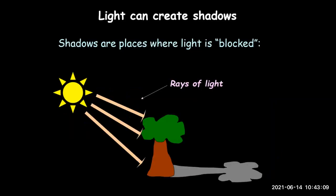The next property is that light can create shadows. Shadows are formed when light is blocked. When you are walking at noon, you can see your shadow on the road because your body blocks the light. For example, when sun rays are blocked by a tree, a shadow is created. If you walk in the dark, there is no shadow because there is no light.